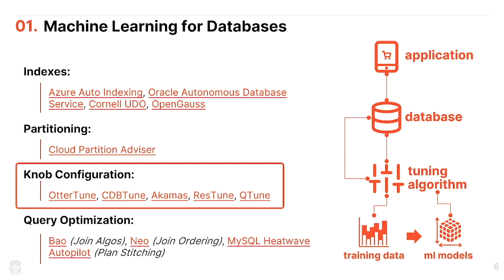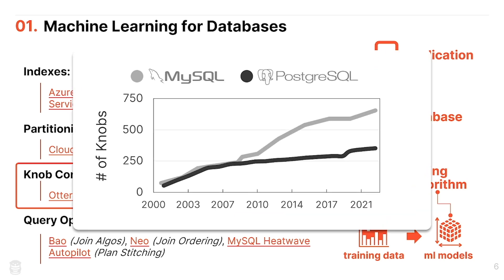For this talk I want to focus on knob configuration, which is what AutoTune originally started with. This is a really challenging problem and actually perfect for machine learning because the set of knobs from one Postgres instance to another is almost always going to be the same — the global knobs are consistent — so you can use priors from other systems applied to a new one. To give an idea of the challenge: looking at the last 20 years of MySQL and Postgres releases, MySQL grew its knob count by 7x and Postgres by 5x. Not all of these affect performance, but enough do to make a real difference, and this doesn't even include table-level knobs like Postgres's per-table fill factor.